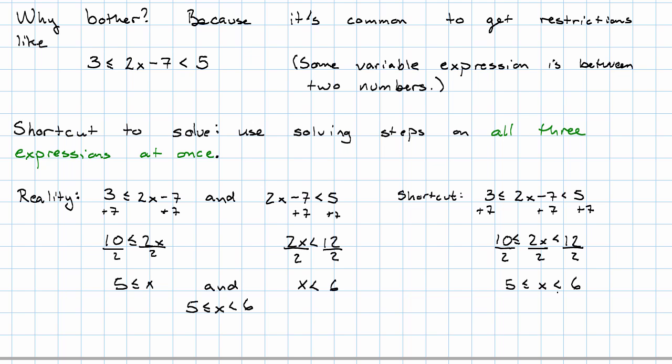So really, what the shortcut saved us is... Well, notice that when we solved this inequality and solved this inequality, we did all the same steps. The shortcut saved us having to do all the same steps twice. It meant we could just do them once.